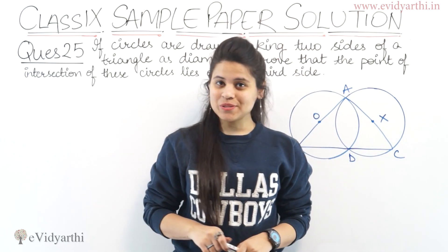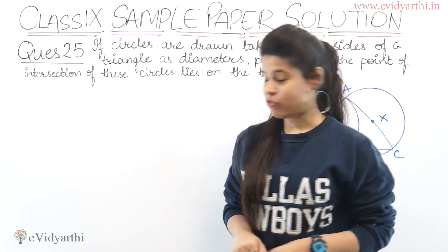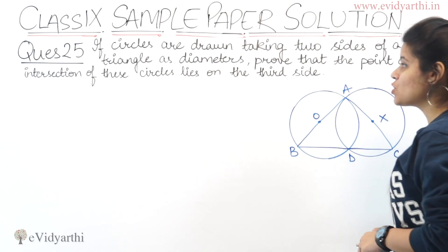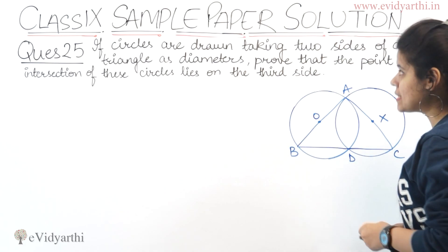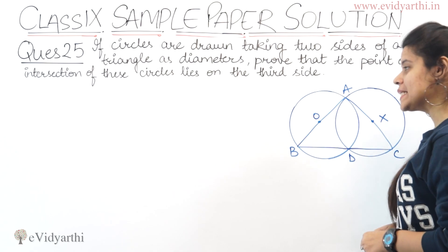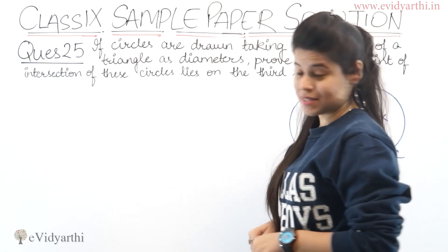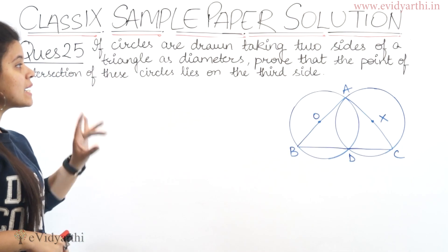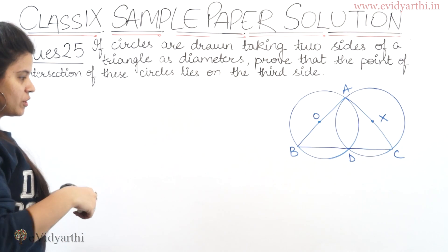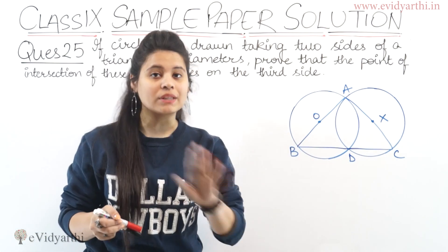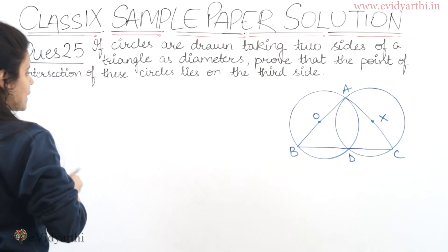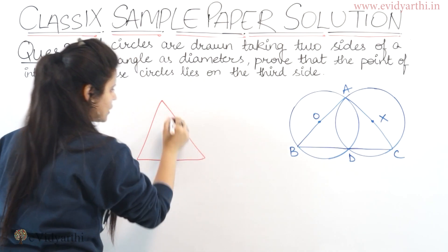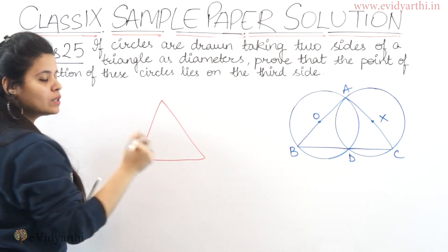Now coming to question number 25: if circles are drawn taking two sides of a triangle as diameters, prove that the point of intersection of these circles lies on the third side. There is one triangle, and the two sides of that triangle have made circles with those sides as diameters.